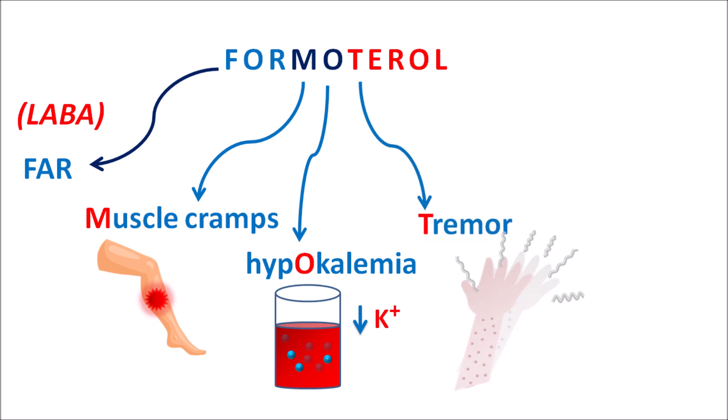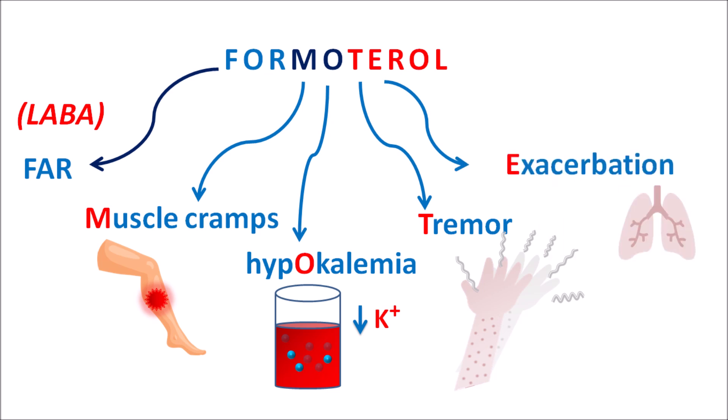The letter T can be remembered as tremor — one of the important side effects of Formoterol is tremor, as this drug increases muscle twitching. The letter E can be remembered as exacerbation. Even though Formoterol is a bronchodilator, it can increase bronchospasm. On long-term use, Formoterol can also increase bronchospasm — this is a paradoxical effect. Exacerbation of bronchospasm, particularly in patients with COPD (chronic obstructive pulmonary disorder), can be observed with long-term use.